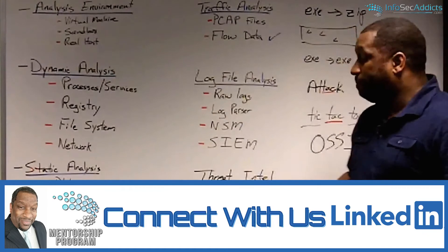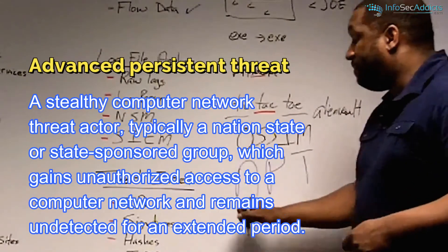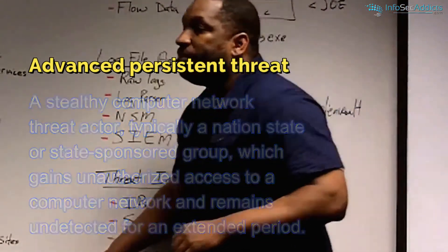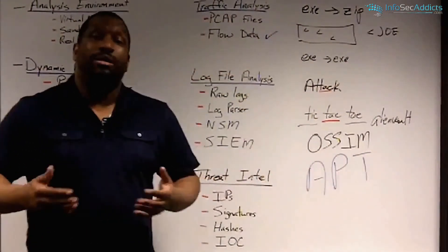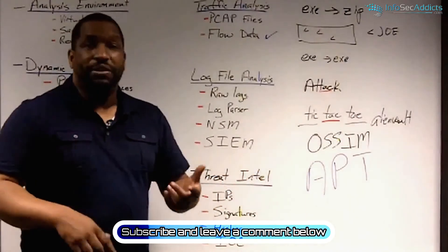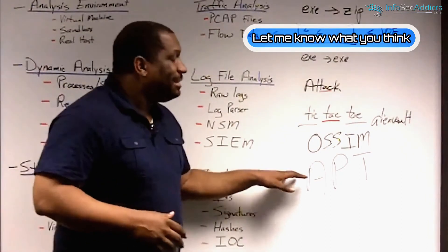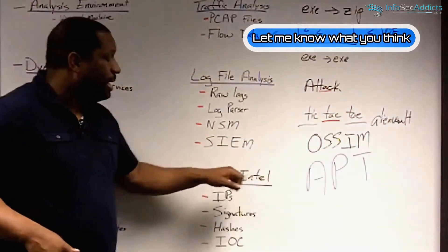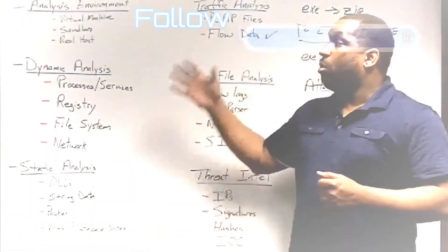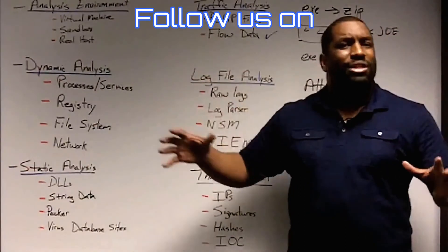When you hear people talking about APT - Advanced Persistent Threat - this is usually the really serious stuff. It's typically referring to state-sponsored hackers breaking into our defense industrial base and large financial institutions, stealing really sensitive data. That's APT. When people are really worried about APT, one of the big things they're purchasing is threat intel. Hopefully this helps you understand the landscape and what all this stuff is.